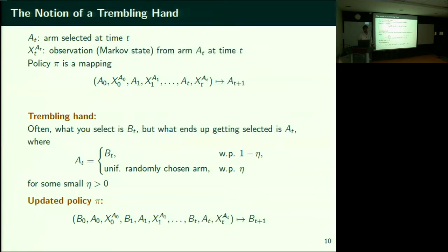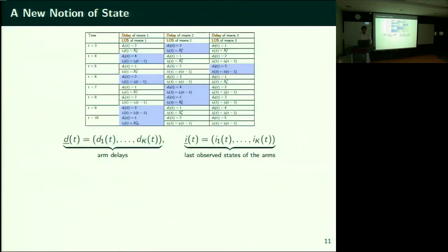Finally, the observation you get is from the arm that actually got selected, not the one you intended. So the updated policy: you intend to select B0 but A0 gets selected, you get observation X0_A0. There is an additional component BT — the non-trembled intention. AT is the trembled hand. Until time t you do all of this; now you must decide where you want to look, which is your intention.